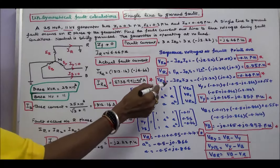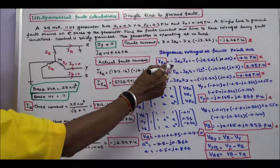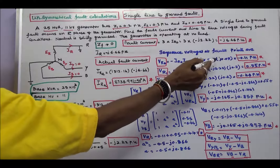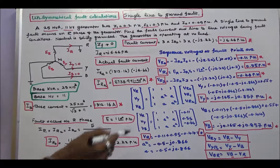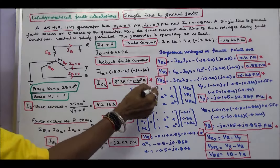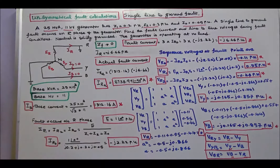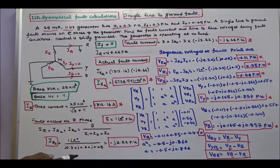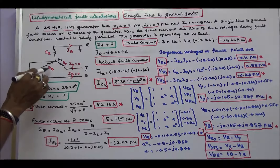Next, calculate the sequence voltages at the fault point. The zero sequence voltage equals minus I_a0 into Z0: minus j 2.22 into j 0.05 equals minus 0.11 per unit. The positive sequence voltage equals E minus I_a1 into Z1, which equals 0.55 per unit. The negative sequence voltage equals minus I_a2 into Z2, which equals minus 0.44 per unit.